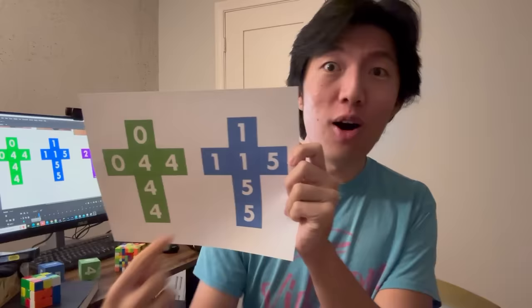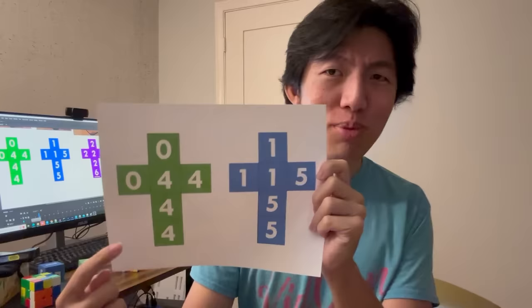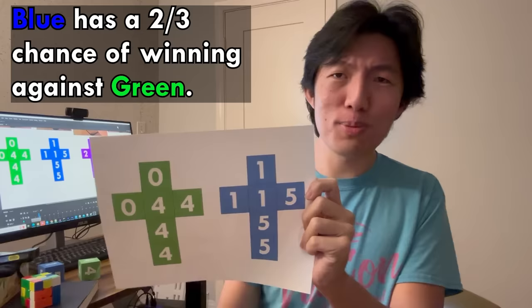The blue die has a 50% chance of rolling a 5, which beats all of green's options. So for that 50%, blue is guaranteed the victory. But even if blue blunders and rolls a 1, there's still a 2 in 6 chance that green blunders even harder and rolls a 0.